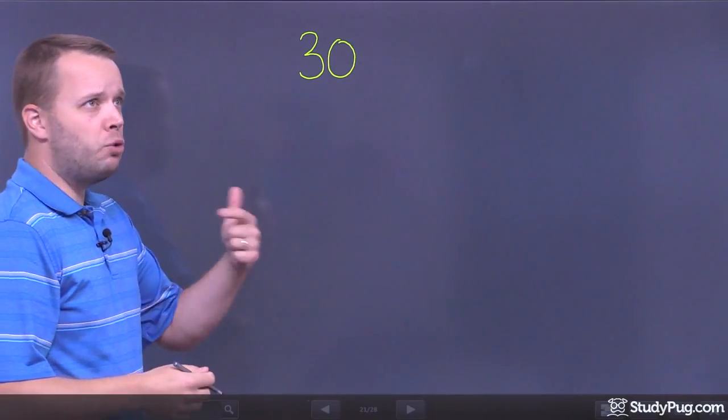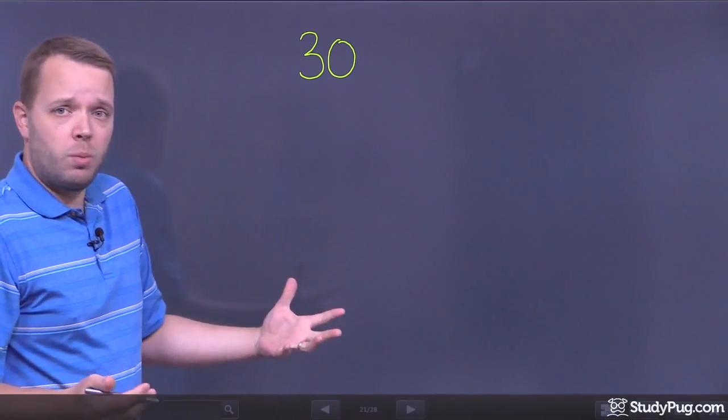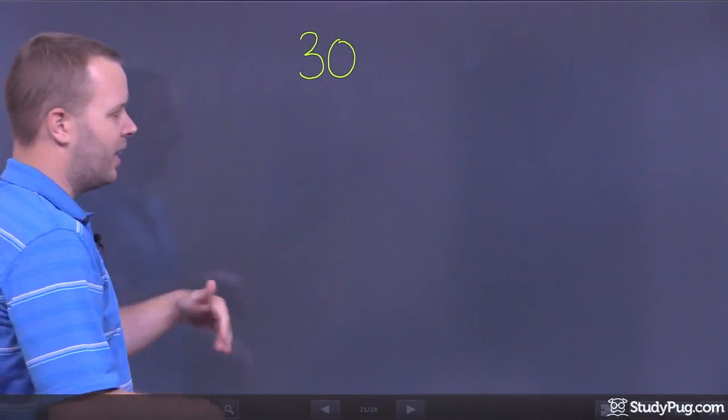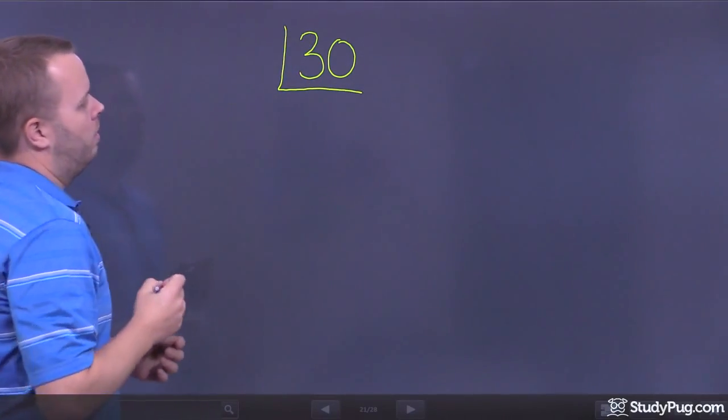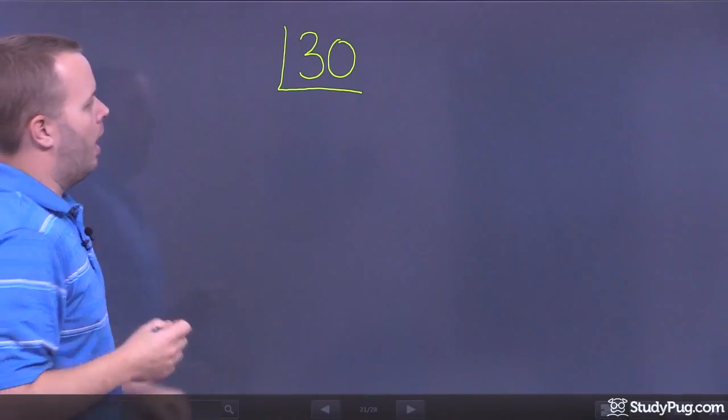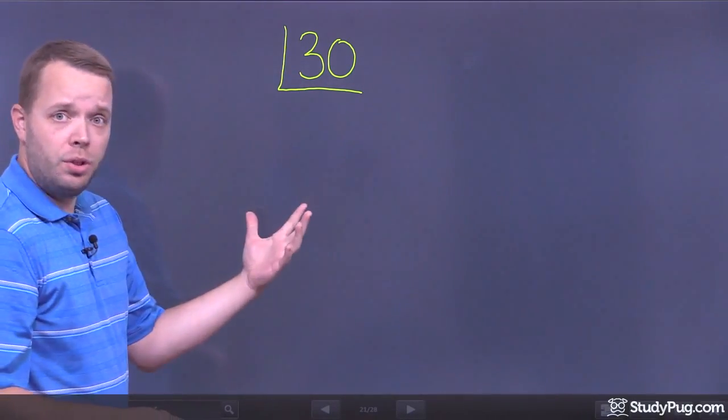And what I'm going to do is I'm going to keep trying to divide tiny numbers out of it. Okay? I'm going to start with the smallest one I can, which is 2. And then I'm going to work my way up from there if I run out. So, I'm just going to put a little block around, or a little L around the 30. And I'm going to divide out a 2, because I know 2 divides into 30.